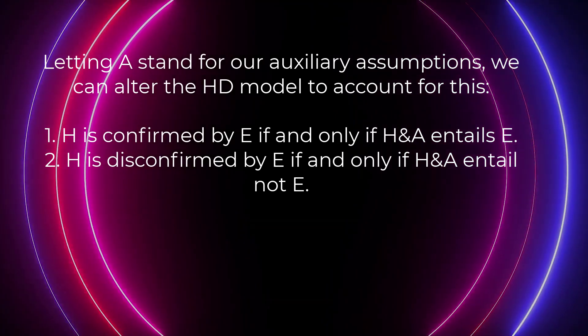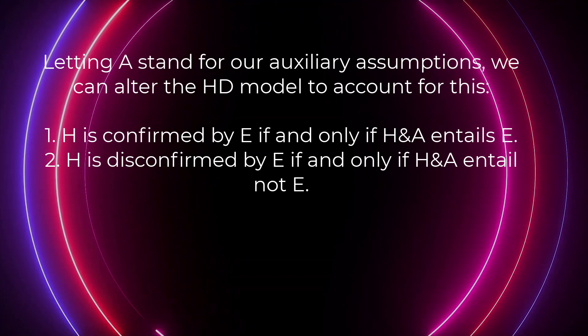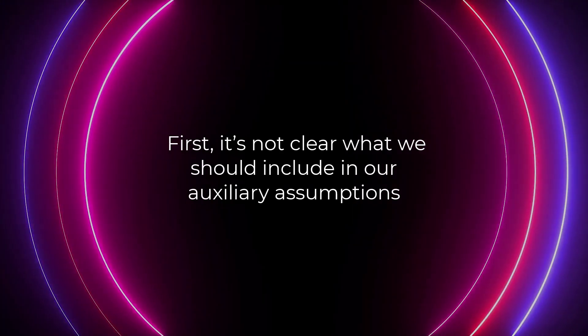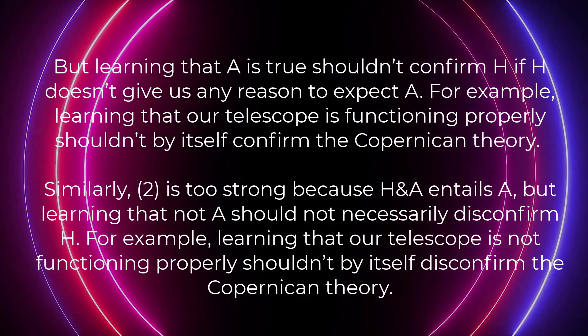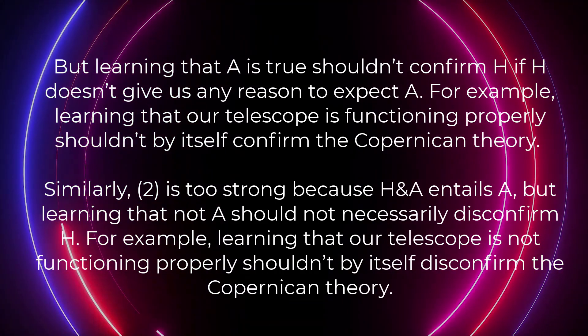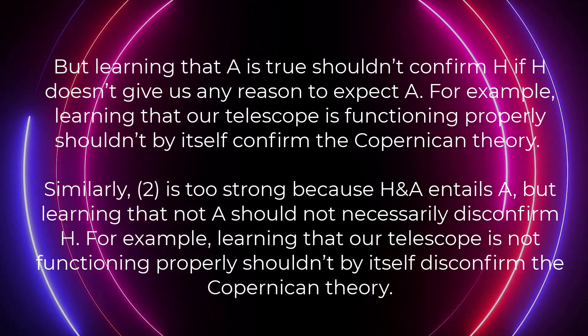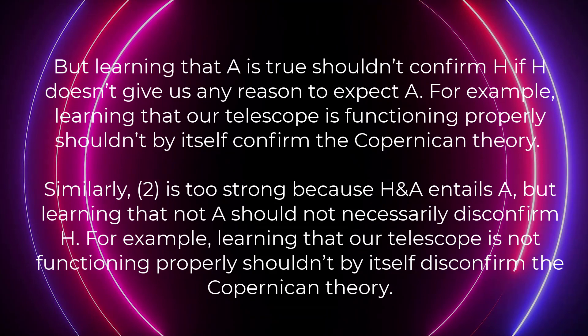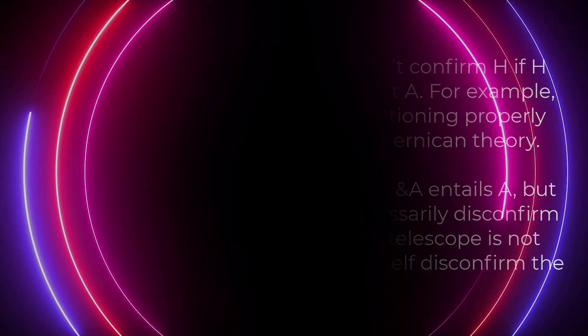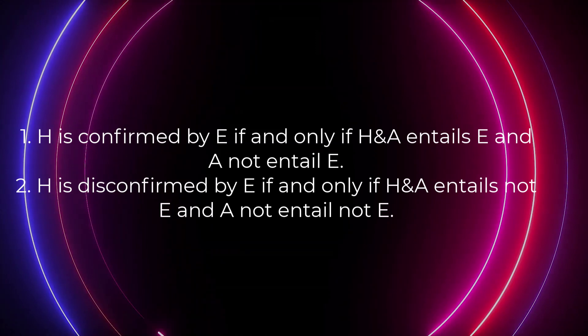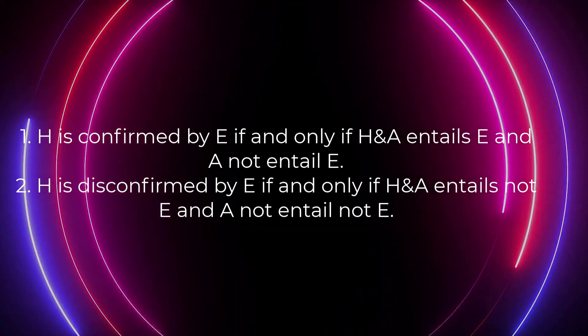Letting A stand for our auxiliary assumptions, we can alter the HD model to account for this: H is confirmed by E if and only if H and A entail E; H is disconfirmed by E if and only if H and A entail not-E. But this brings in new problems. First, it's not clear what we should include in our auxiliary assumptions. Second, condition one is too strong, because H and A entails A, but learning that A is true shouldn't confirm H if H doesn't give us any reason to expect A. For example, learning that our telescope is functioning properly shouldn't by itself confirm the Copernican theory. Similarly, condition two is too strong because learning that not-A should not necessarily disconfirm H.